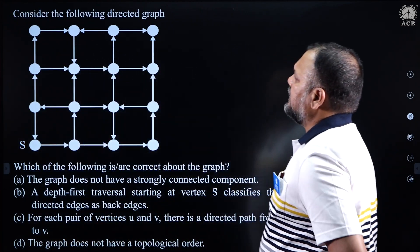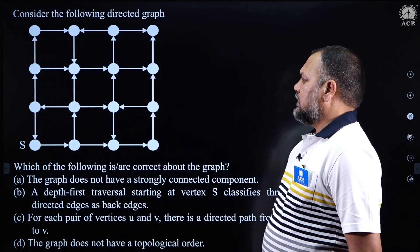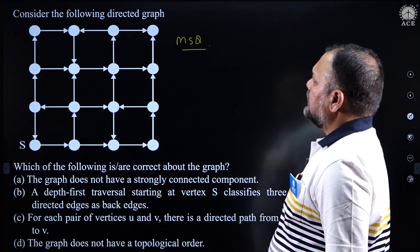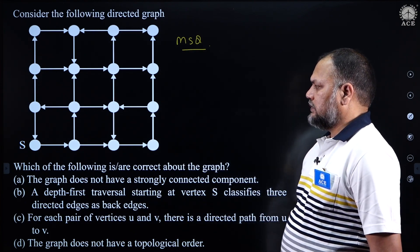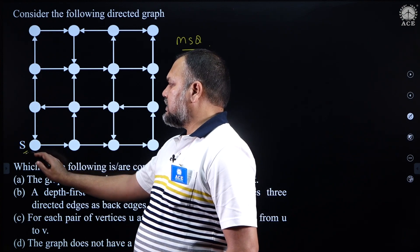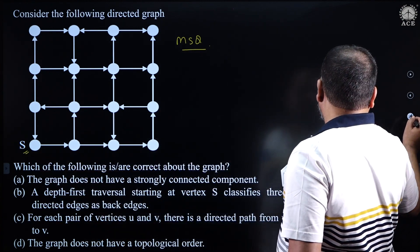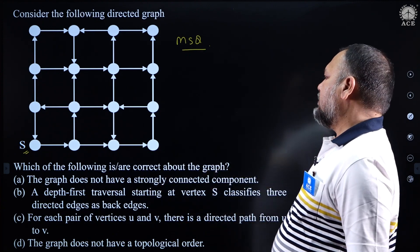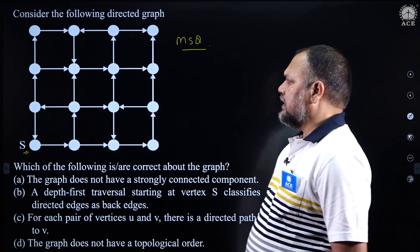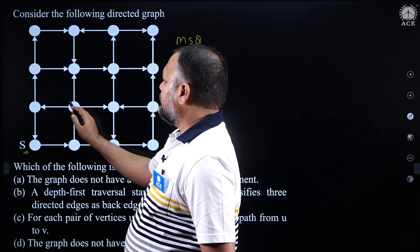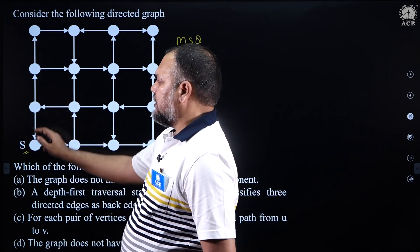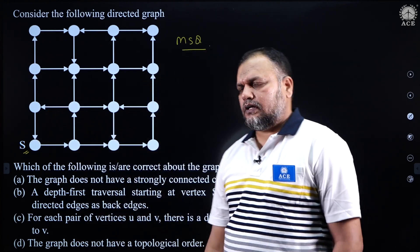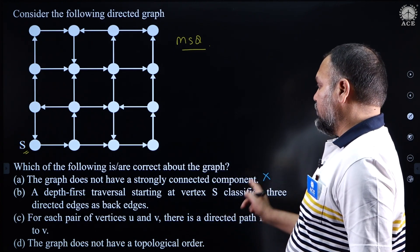This third question is also slightly interesting — it is MSQ. Consider the following directed graph, where one of the vertices at the bottom is marked as S. Which of the following is correct about the graph? The first option says the graph does not have a strongly connected component — that is wrong. It does have a strongly connected component: if I take this subgraph, it is one strongly connected component, and a single vertex is also a strongly connected component.